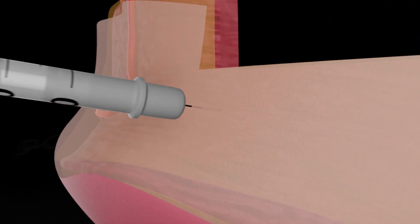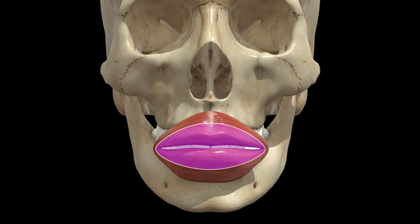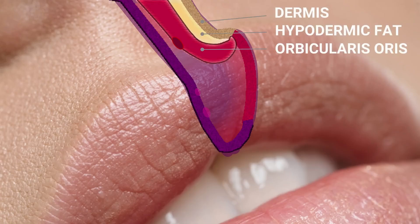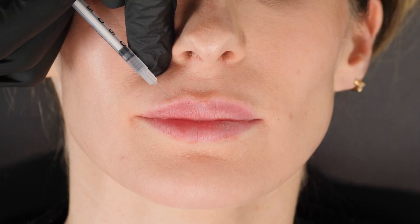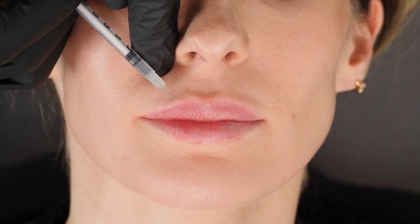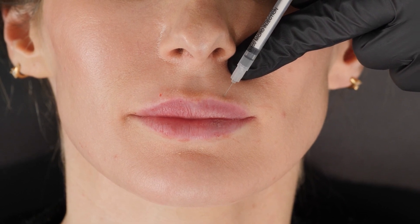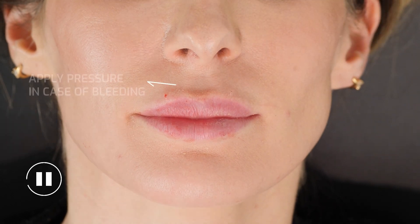What's the right depth to inject the orbicularis oris muscle? If you inject very superficially, you're in the dermis — it's a very sore place as the increased pressure will cause intradermal injections with toxin to sting. Go a little bit deeper and they hurt a little bit less, and that's usually where I try to inject: on the surface of the muscle, where the receptors are likely to be, or potentially slightly deeper. But if you keep injecting deeper still, you're going to squirt botulinum toxin into a patient's mouth, and that's a waste of money.